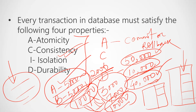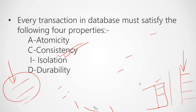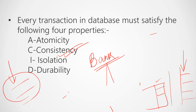The third property is Isolation. Isolation is a type of property which allows the database system to perform more than one transaction at a time. Suppose you have a bank or an organization where multiple customers' details are stored. If the database is being used by multiple customers at the same time, the isolation property ensures every transaction is maintained independently without interference.